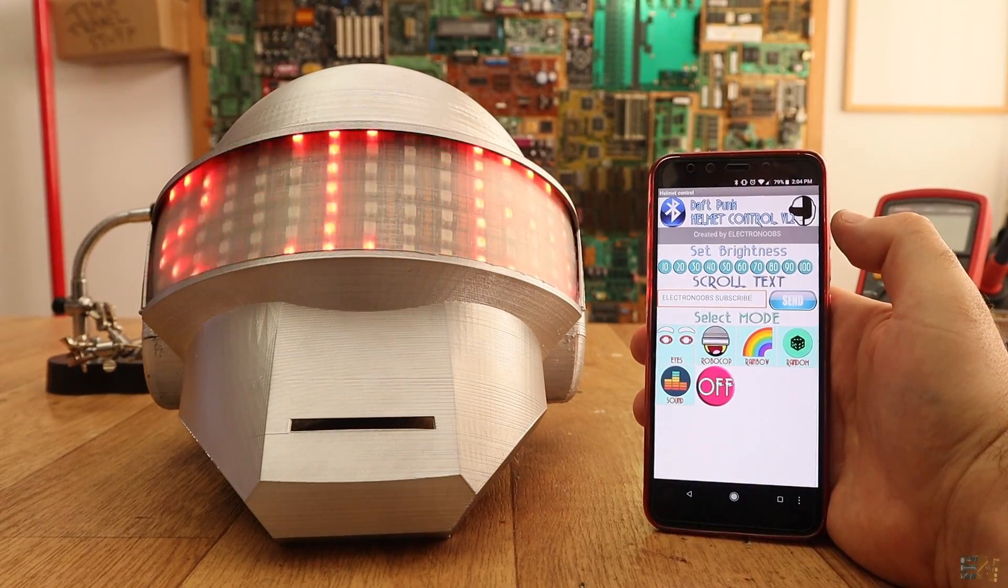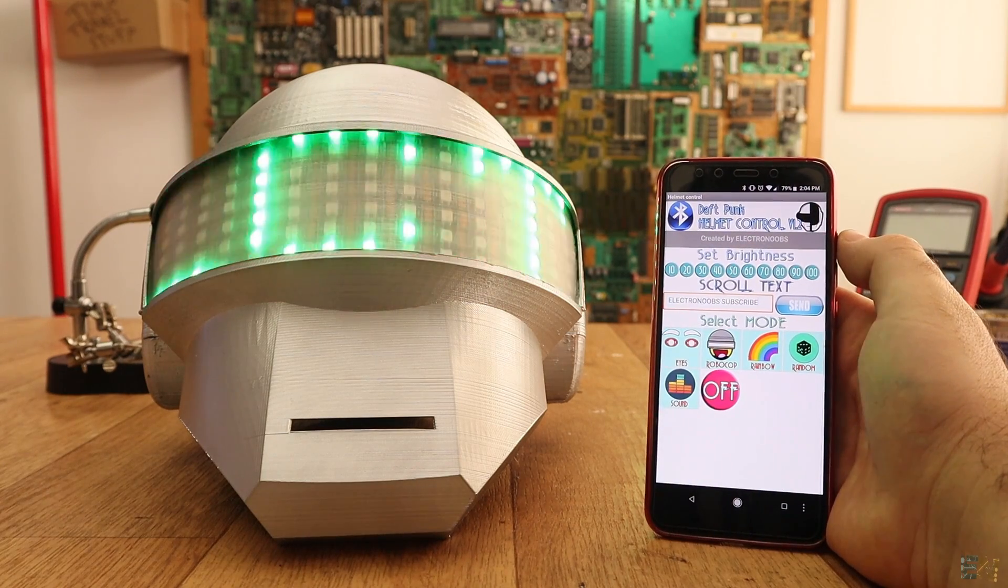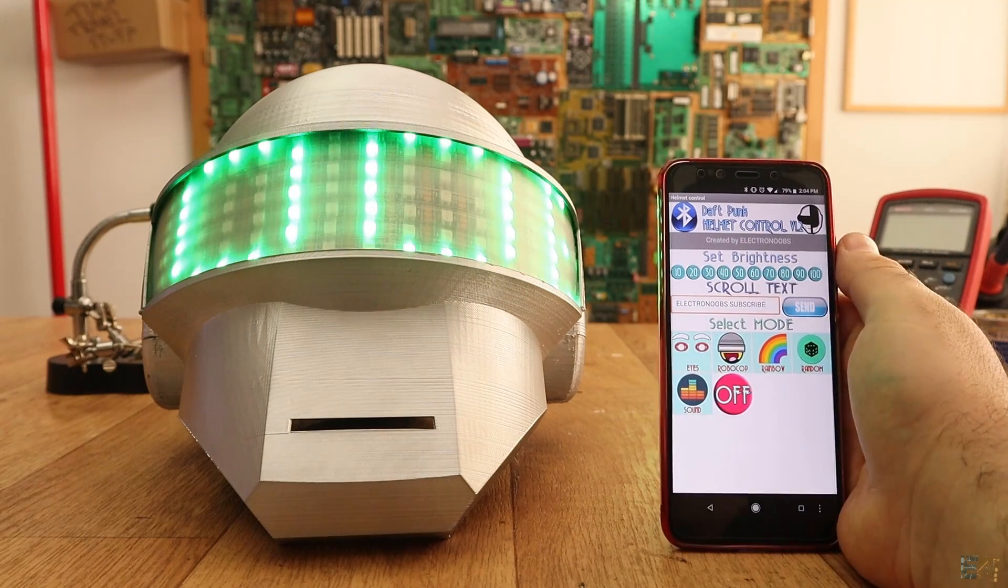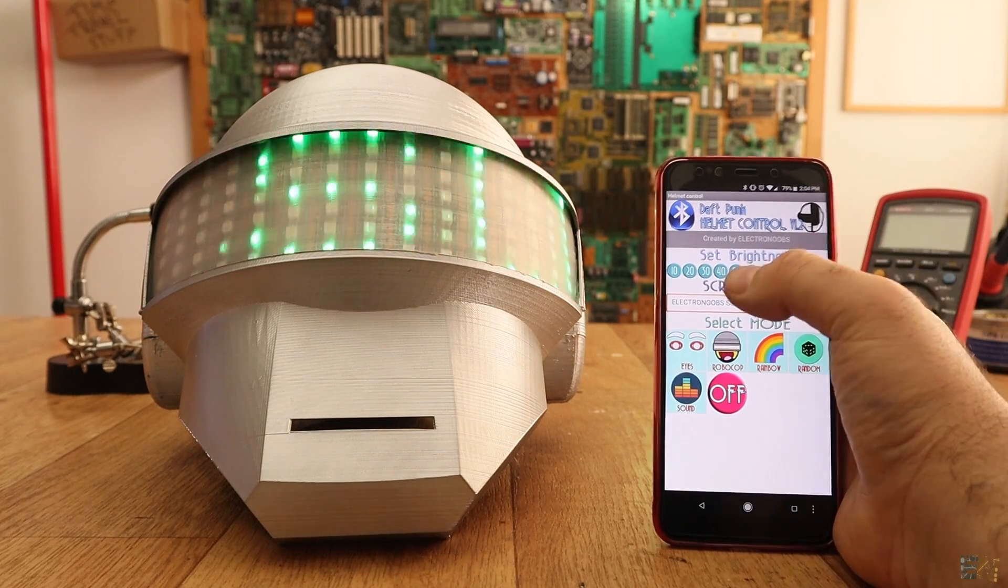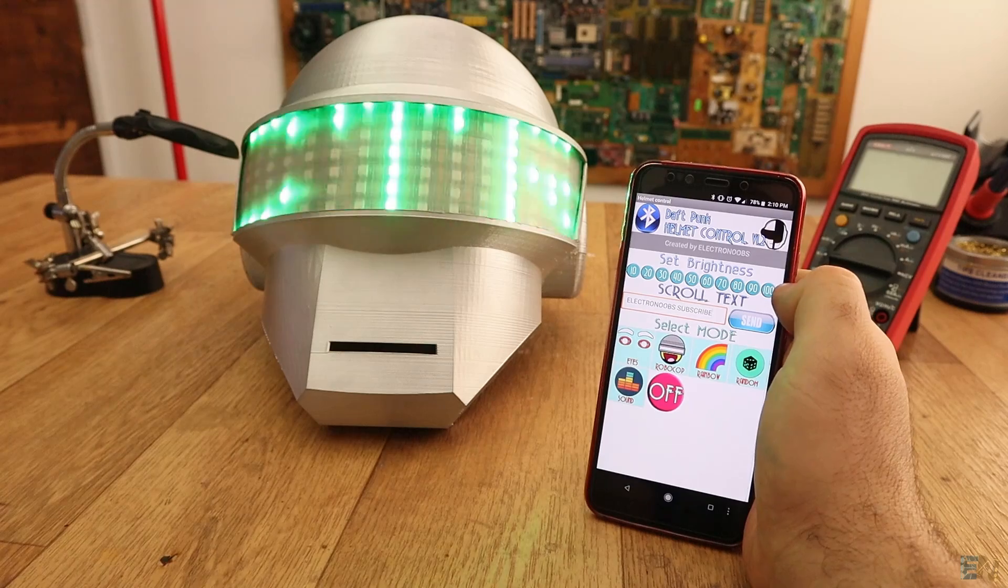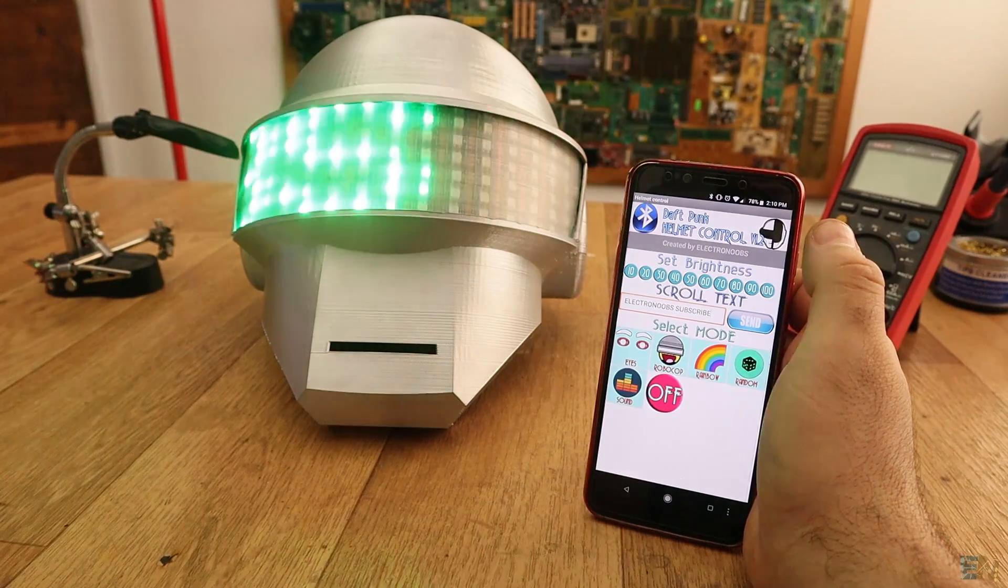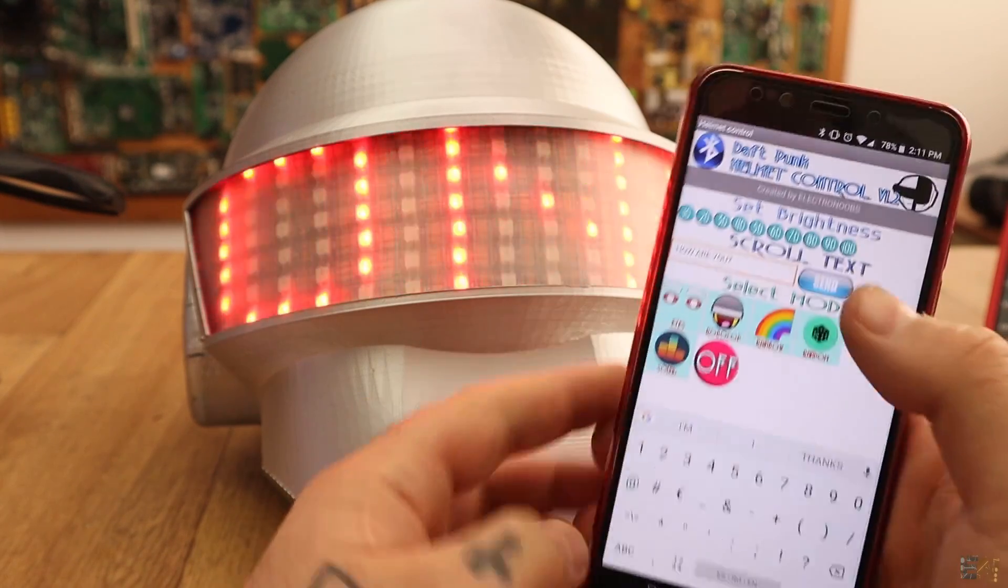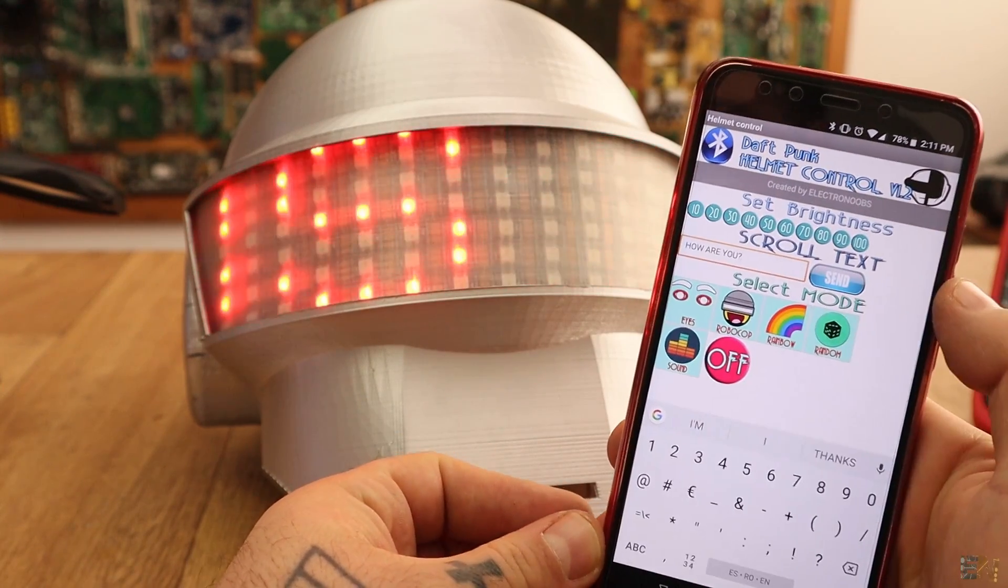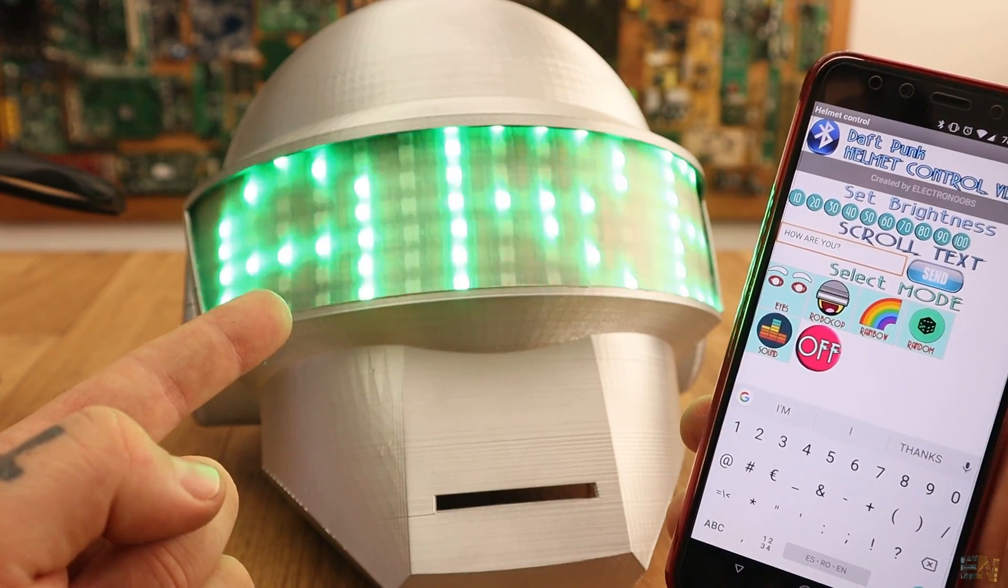So now let's test the brightness. I set the brightness to 30% and there you go. Now I set it to 10% which is a little bit weak as you can see. Now I set it to 40 which is already bright enough and at 100% it is very bright. Now I type a new text. I type how are you and press send. And as you can see, the new text is now scrolling onto the visor. Pretty cool, right?